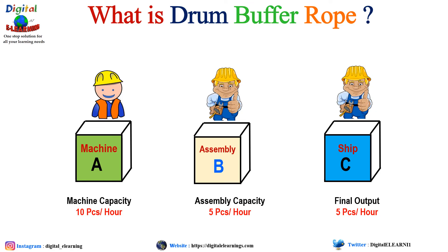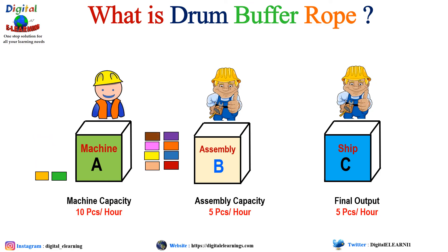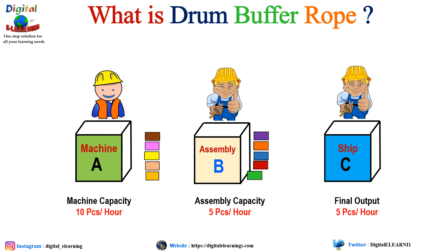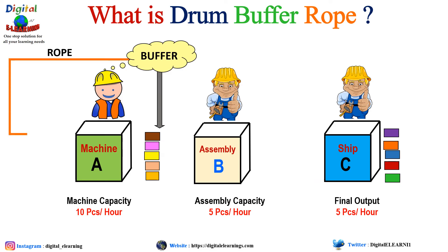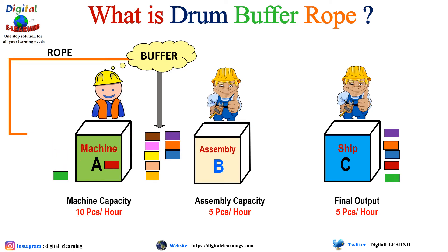Machine A processes 10 pieces per hour, but Machine B has a limit and cannot produce more than 5 pieces per hour. So 5 pieces are moved by Assembly Line B, and we remain with 5 pieces as a buffer. As soon as this buffer starts decreasing, it triggers through a rope mechanism to Machine A to produce more parts, and those parts are shipped to the buffer area. This is how the mechanism controls production.